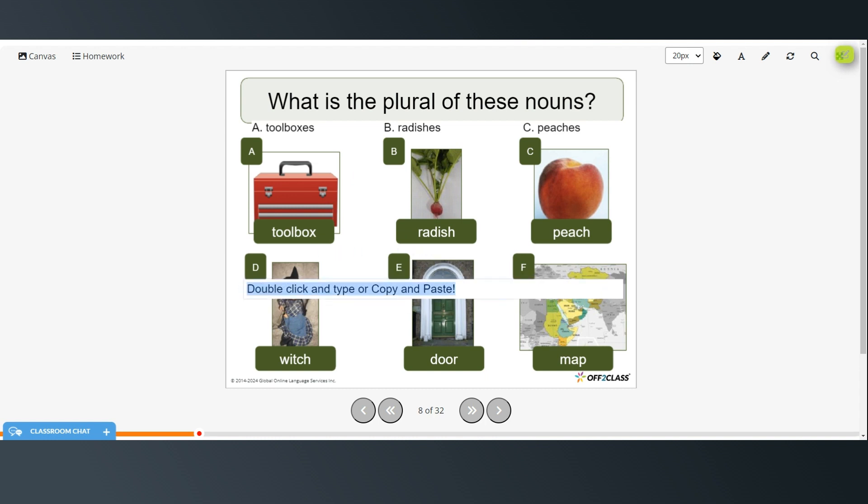Okay, next we have witch, which ends in a CH. So that becomes witches. So for letter E, we just need to add an S. Doors. And for letter F, we just need to add an S. Maps.